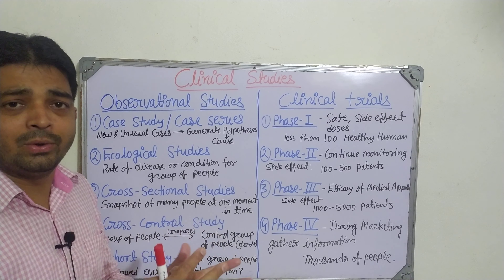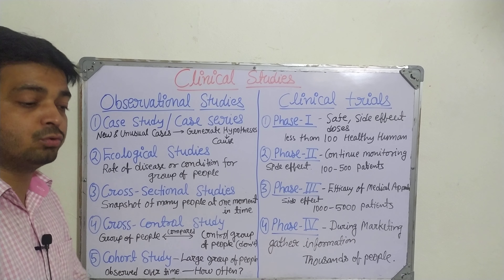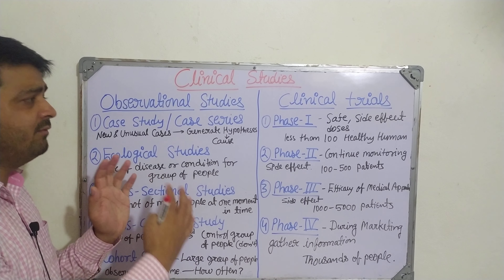Cross-sectional studies take a snapshot of many people at one moment in time. During the pandemic, we can understand that at the same time in winter season, some countries were in their third wave while others were in their first wave, or the second wave came earlier. This depends on many factors such as temperature of the location, people's immunity, their lifestyle, their susceptibility, and many other things.